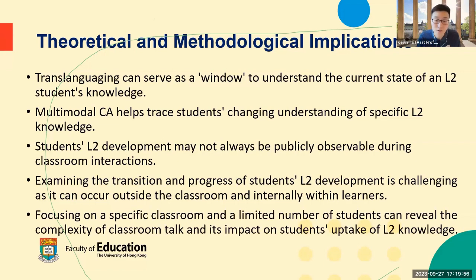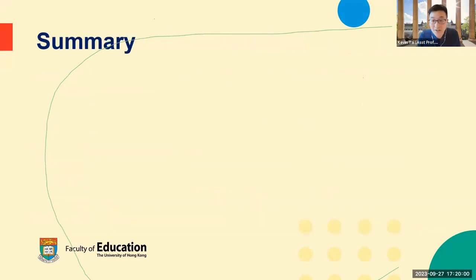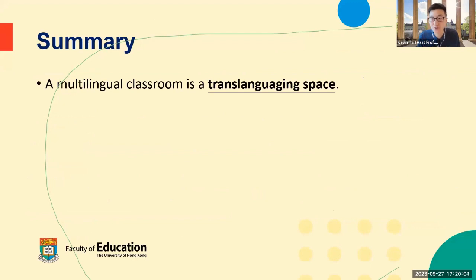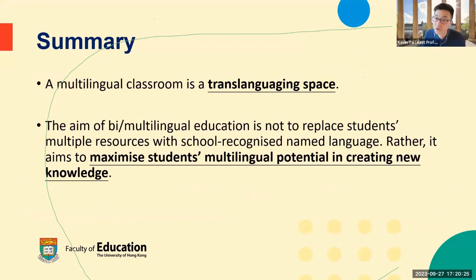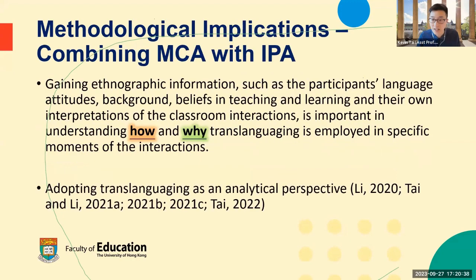In terms of theoretical contribution, students' achievement of conceptual understanding of second language knowledge can be an embodied activity, indicating that translanguaging can work as a window to understand the current state of a student's knowledge in the learning process. I've also demonstrated how multimodal conversation analysis as a method can allow researchers to trace students' change of understanding of specific second language knowledge. Student second language development may not always be publicly observable during classroom interaction — this is a challenge shared by second language acquisition research in general. Focusing on a specific classroom allows researchers to uncover the complexity of classroom talk and how it contributes to students' uptake of second language knowledge. The combination of MCA and IPA allows us to understand both how and why translanguaging is employed.